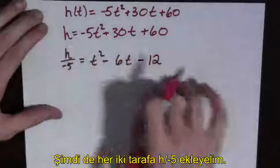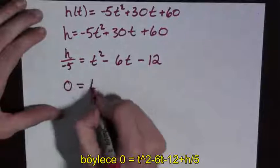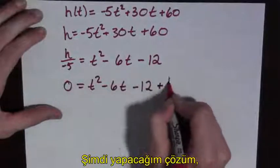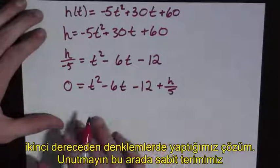Now I'm going to add h over 5 to both sides, so I get 0 equals t squared minus 6t minus 12 plus h over 5. Now, what I'm going to do is use the quadratic formula.